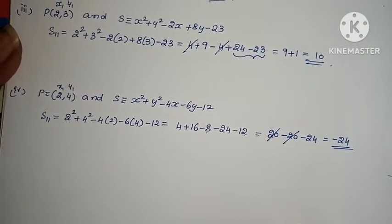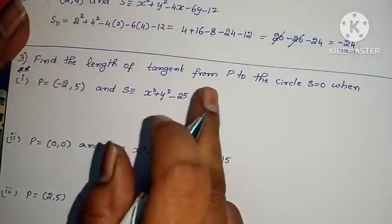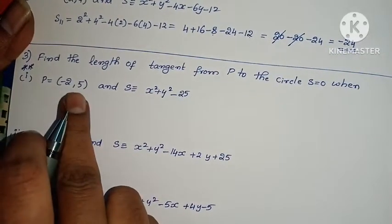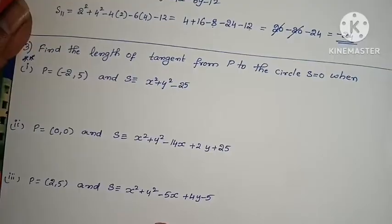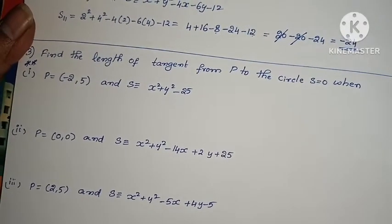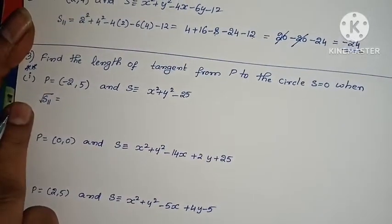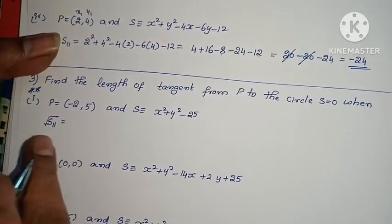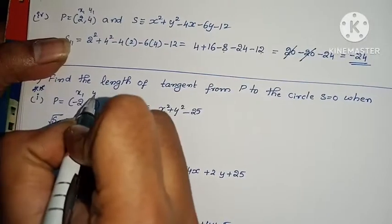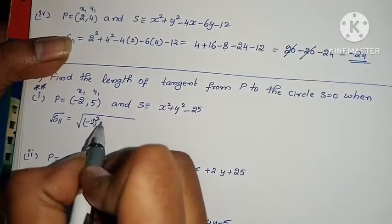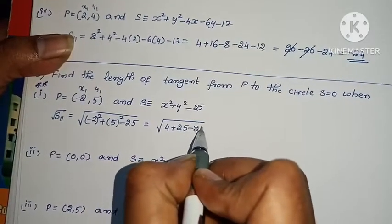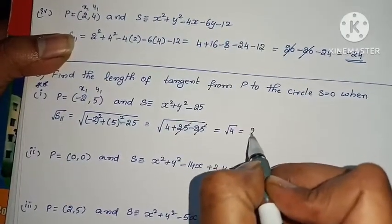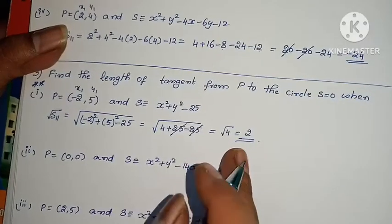Next problem: find the length of the tangent from P to the circle S equals 0, when P equals (minus 2, 5) and S equals x squared plus y squared minus 25. The formula for length of a tangent is root of S11. Substituting x1=minus 2, y1=5: root of (minus 2 squared plus 5 squared minus 25) = root of (4 plus 25 minus 25) = root 4 = 2.